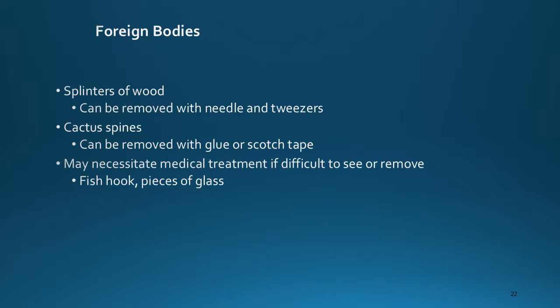There are times when we need to care for patients with foreign bodies such as splinters of wood or cactus spines. Splinters of wood can be removed with a needle and tweezers. A good trick for removing cactus spines is to use scotch tape or glue. In some situations, medical treatment may be necessary — for example, when the foreign body is difficult to see or remove, such as a fish hook or a piece of glass.